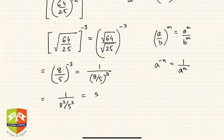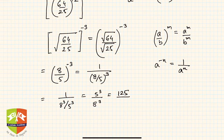We can write this as 1 upon 8 cubed divided by 5 cubed, which equals 5 cubed by 8 cubed, and hence the answer is 125 by 512. This is the simplified form — the solution to the first question.